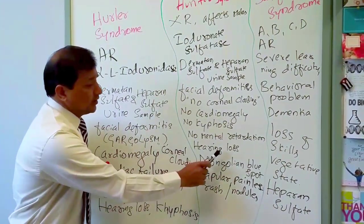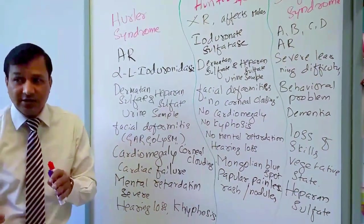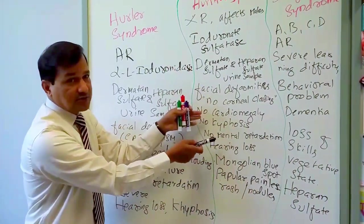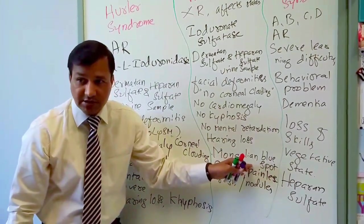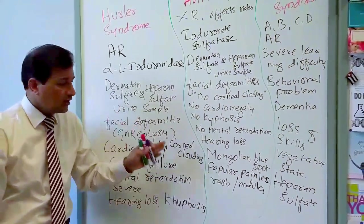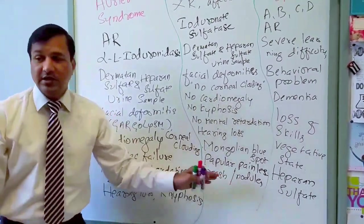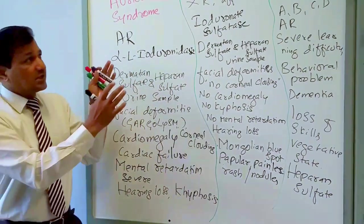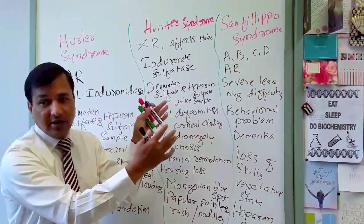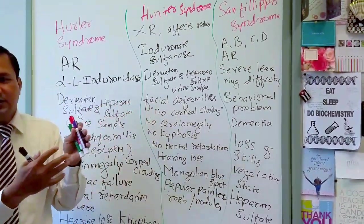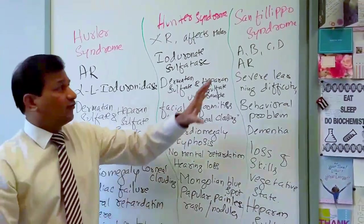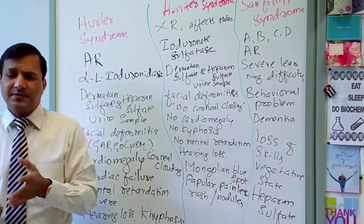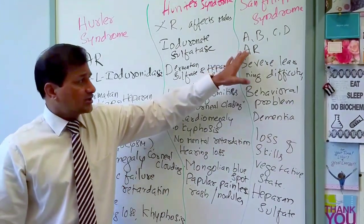Hunter syndrome patients do have hearing loss like Hurler syndrome. The characteristic positive signs differentiating Hunter from Hurler are Mongolian blue spot and papular painless rashes or nodules between the scapulae. Sanfilippo syndrome is a different category — behavioral disorder with learning difficulties — four types (A, B, C, D) with four different enzyme deficiencies; remembering individual enzyme names is not necessary.